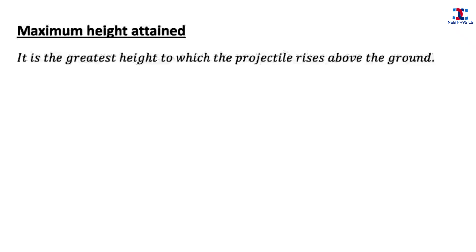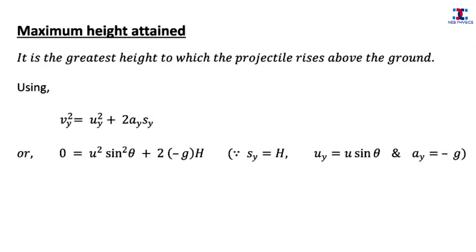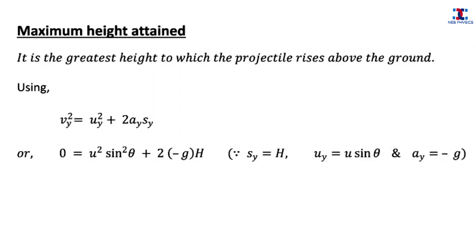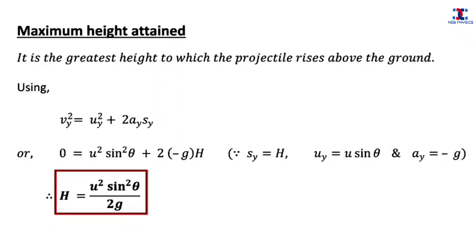Now let's derive the expression for maximum height H. The maximum height is the greatest height to which the projectile rises from the ground. Using the equation of motion, vy² equals uy² plus 2·ay·sy, and substituting the values of sy, uy, and ay — noting that sy equals H when the projectile is at maximum height — we get the expression for maximum height H equals u² sin² theta divided by 2g.